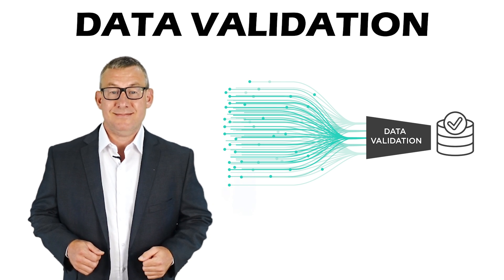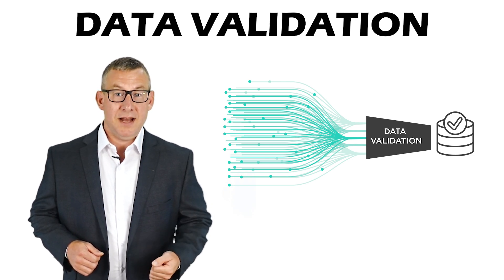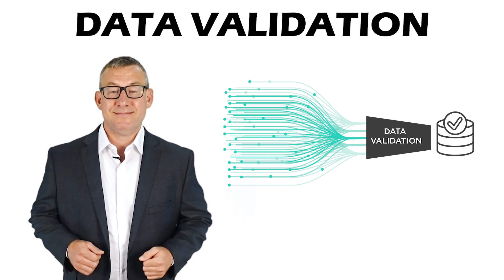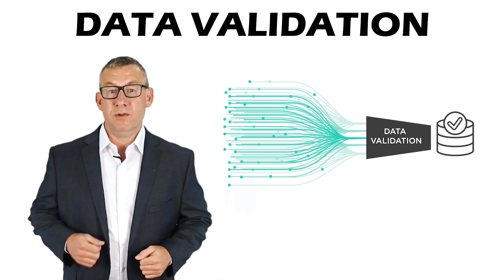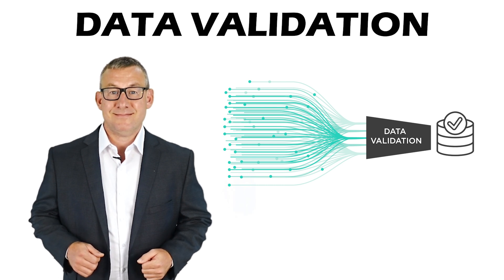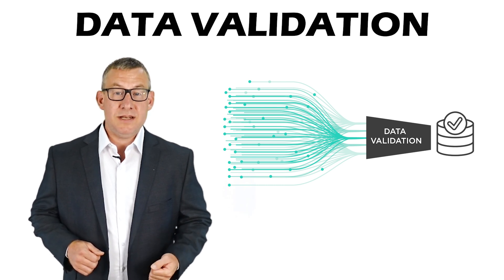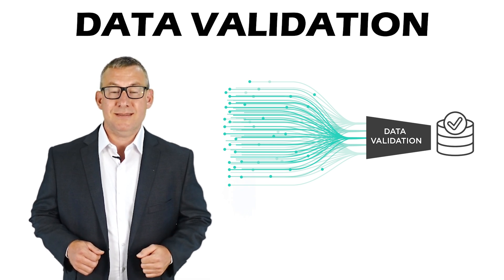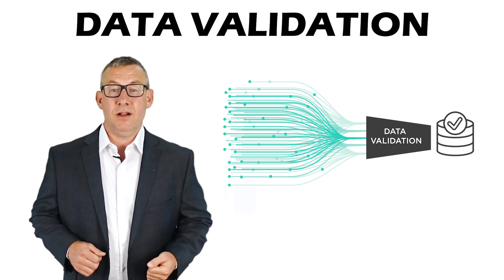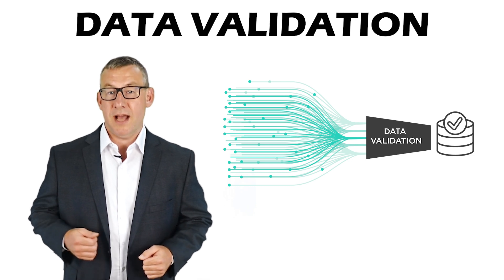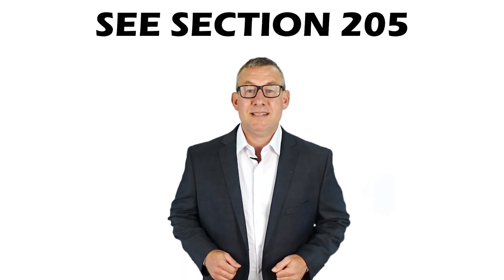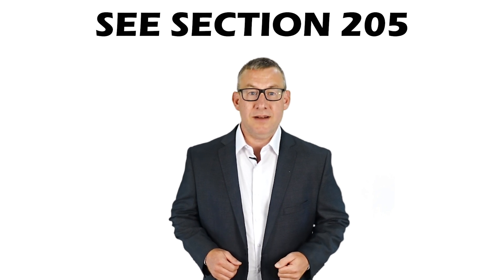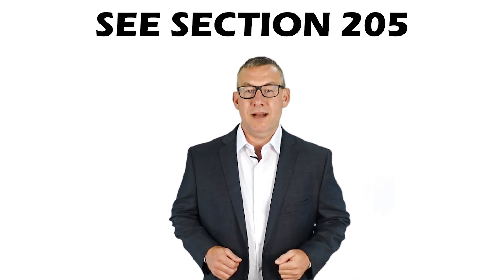Data Validation: validating data ensures accuracy and completeness. Data validation involves comparing measured data to real-world true values. Data validation requires a source of accurate data for comparison. Data validation may involve developing accuracy statistics to compare with data standards. See Section 205, Understanding Data Validation and Uncertainty, for more on data validation.